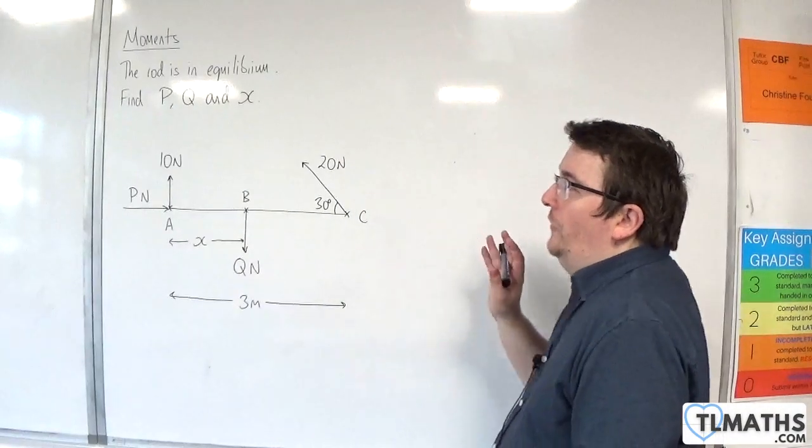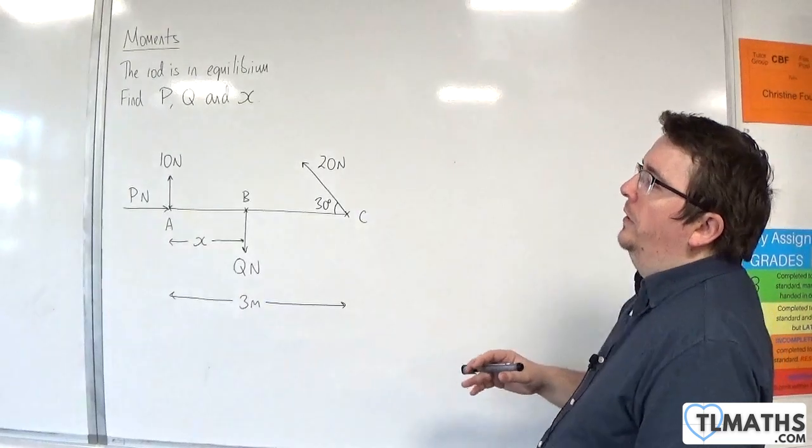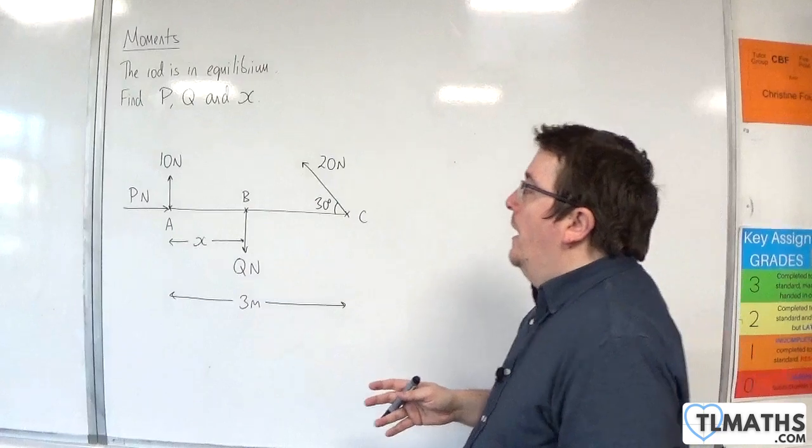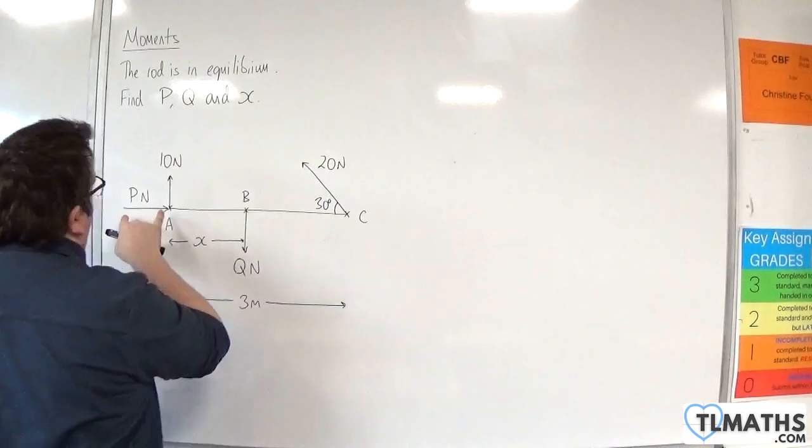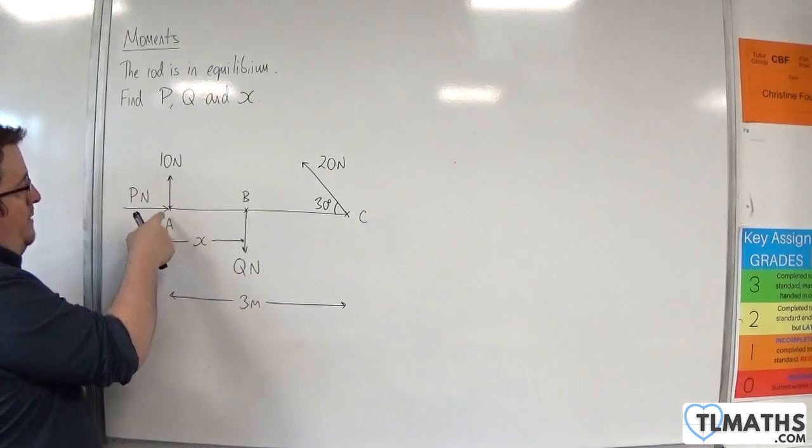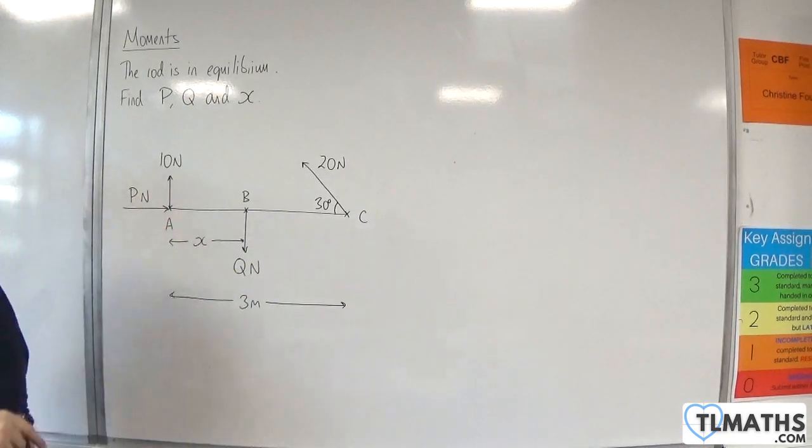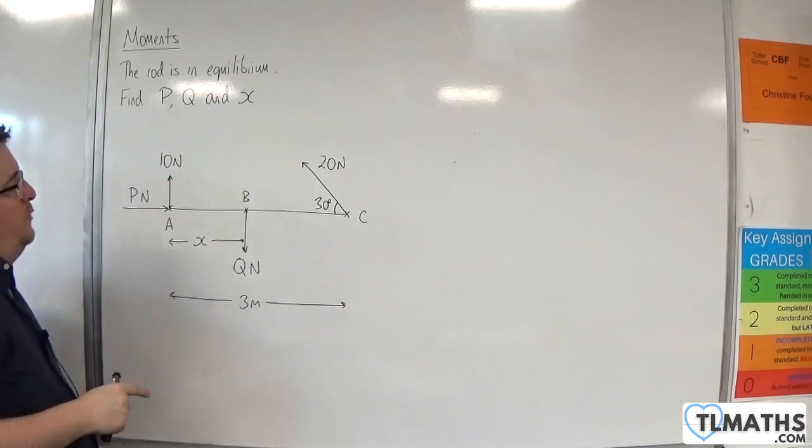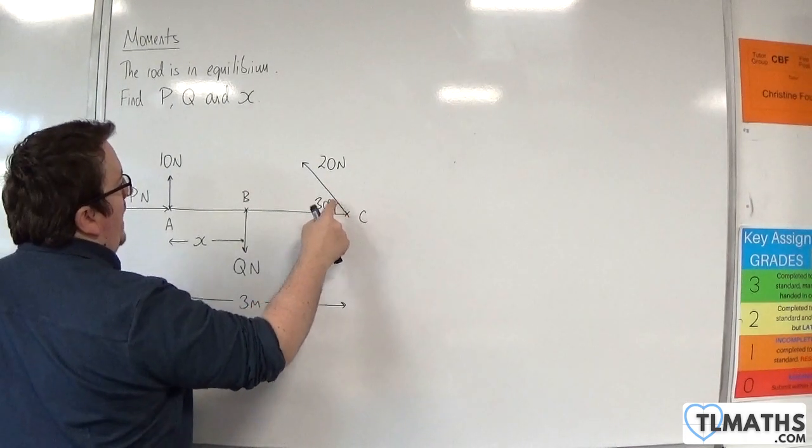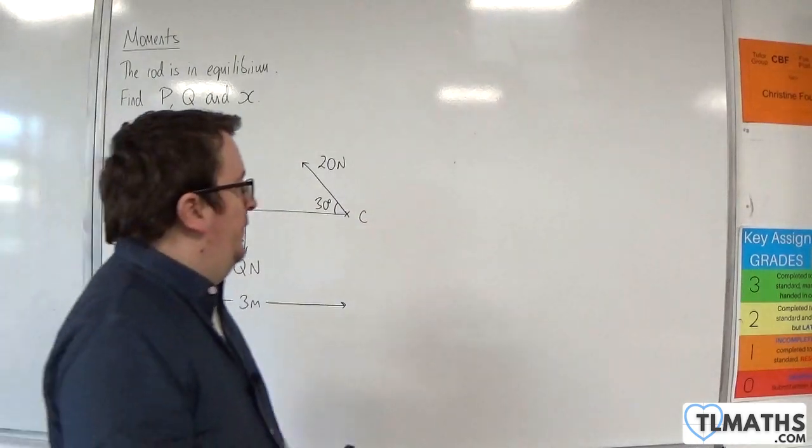In this video, we're looking at a slightly more complicated example. We've still got a horizontal rod that is in equilibrium. We have a force P which is being applied to the right at A. That's different to what we've looked at previously. And we also have a force at C being applied at this angle of 30 degrees.